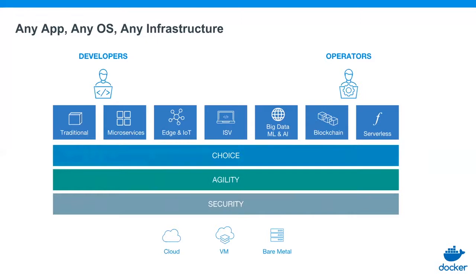The Docker platform is built on three core pillars. We're providing choice — the ability to containerize any application and run it on any infrastructure. We're providing agility — the ability to deploy applications quicker than ever before, move them to the cloud quickly, or scale up and down on demand. And security is absolutely key, whether that's securely packaging your application as a container, or security built into the platform to ensure your deployed application is as secure as possible.